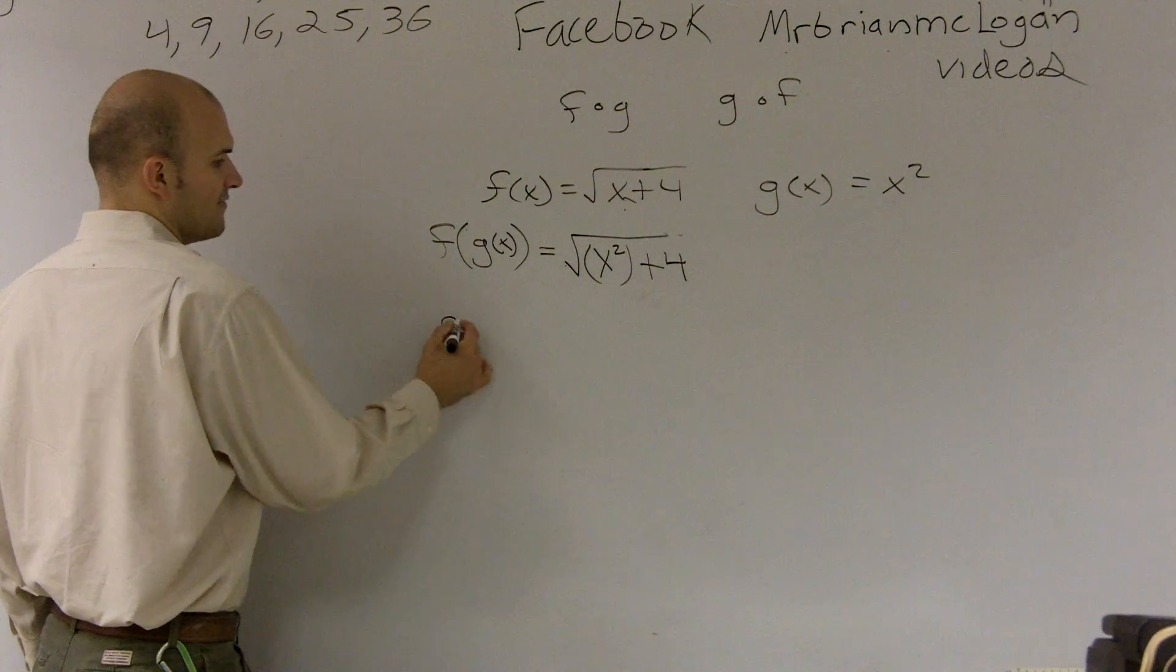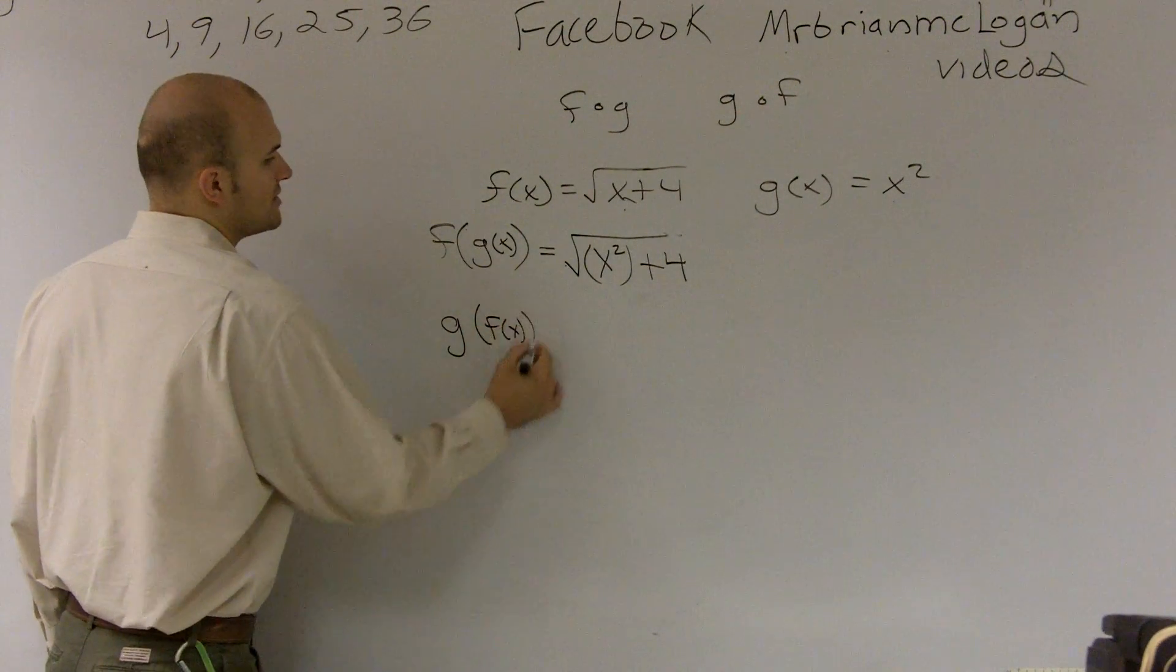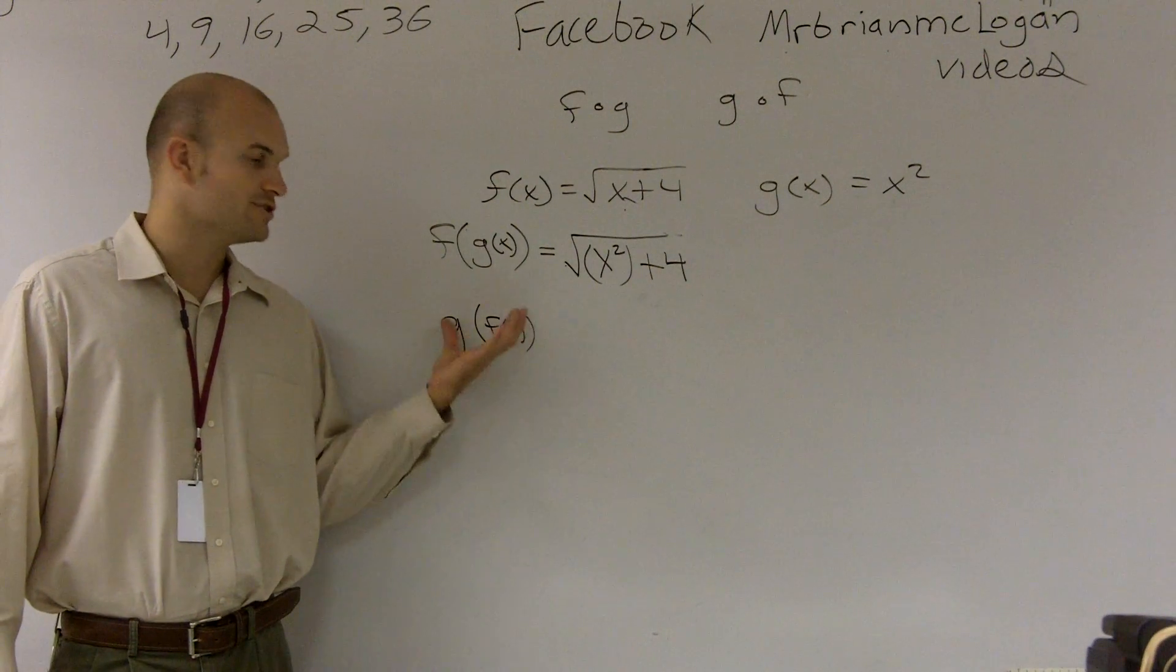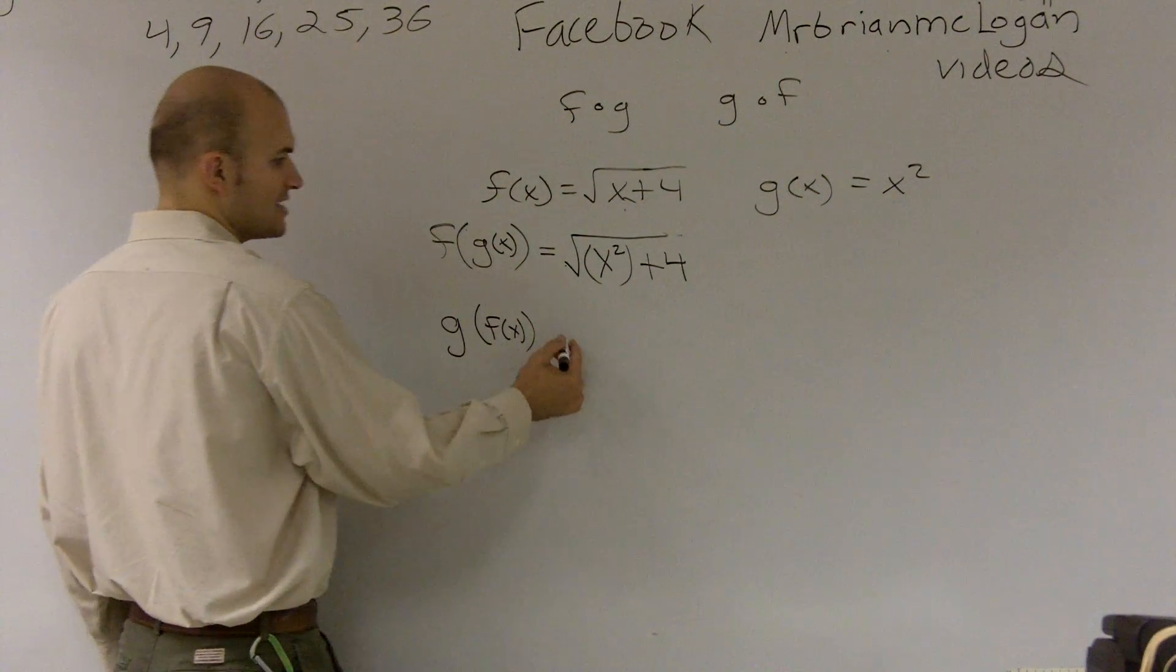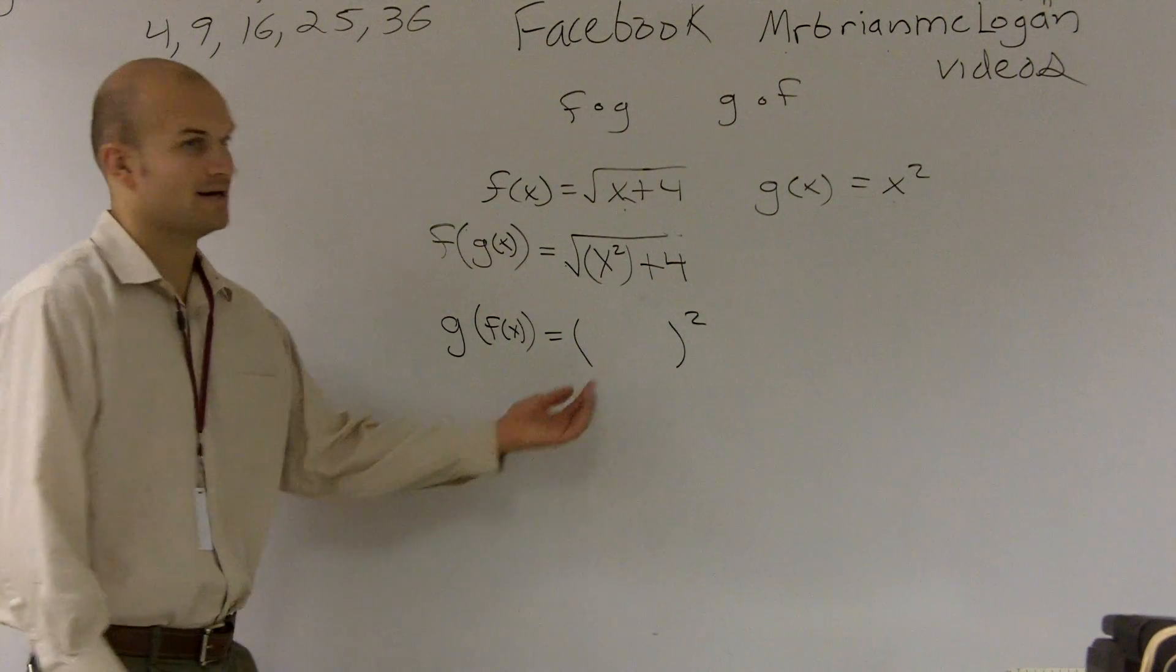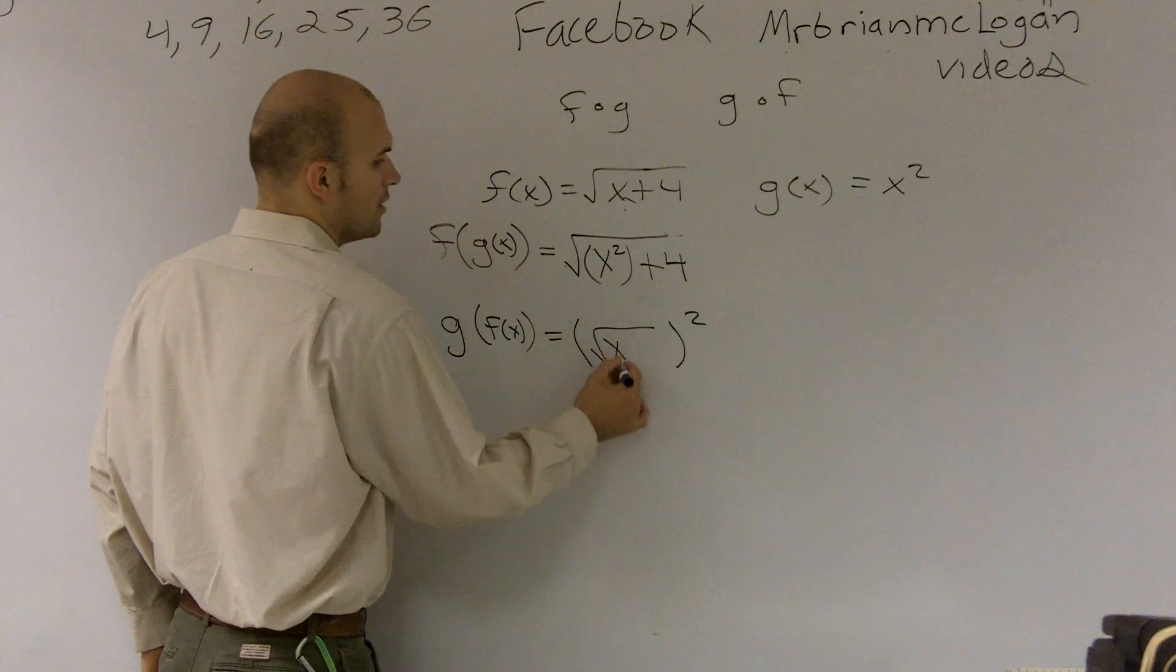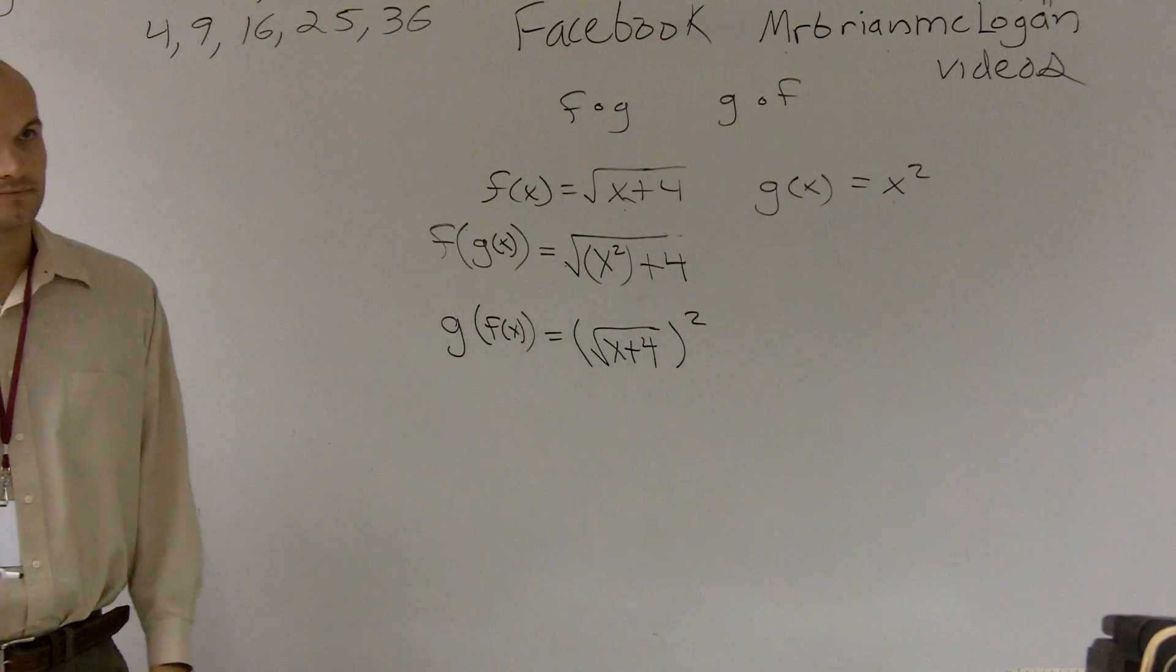Let's take a look at g of f of x. For g of x, I'm going to do the exact same thing, except now I'm going to plug in f of x into my g of x function. So I'm going to take my g of x, which is x squared, but I'm going to actually plug in what f of x is, which is the square root of x plus 4.